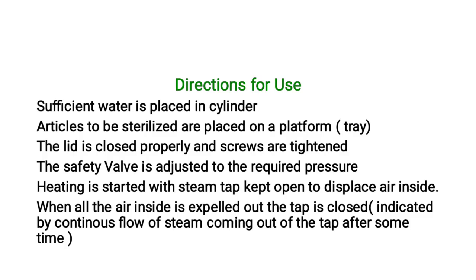Directions for use: sufficient water is placed in the cylinder; articles to be sterilized are placed on a platform or tray. The lid is closed properly and screws are tightened. The safety valve is checked and pressure is adjusted. Heating is started with the steam tap kept open to displace air inside. When all the air inside is expelled out, the tap is closed, indicated by a continuous flow of steam coming out of the tap.